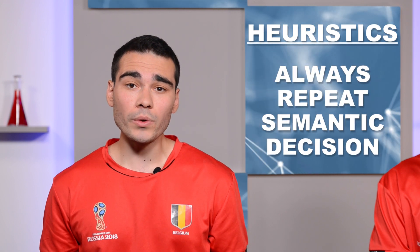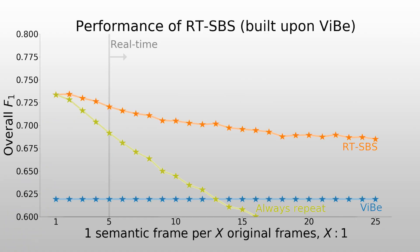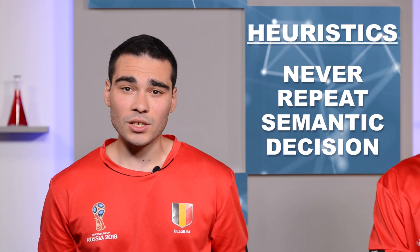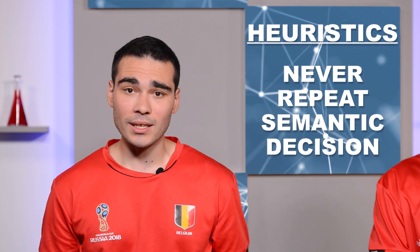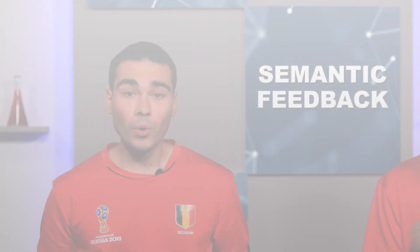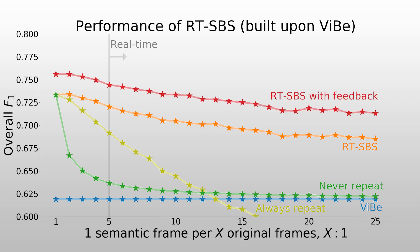You might wonder how useful our change detection algorithm is — what would happen if we tried different strategies? For example, we can always repeat the previous semantic decision instead of checking if the pixel is still the same. The performance of such an approach quickly drops and even gets worse than the original ViBe algorithm at some point. On the other hand, we could never repeat the previous decision and always trust the background subtraction when no semantics is available. As you might guess, this does not work well and we quickly get close to the performance of ViBe. So our way to proceed is the best — we desperately need to check if the pixel still belongs to the same object. The semantic feedback also provides a huge increase in performance across all semantic frame rates.